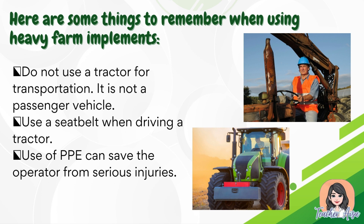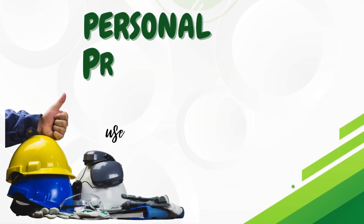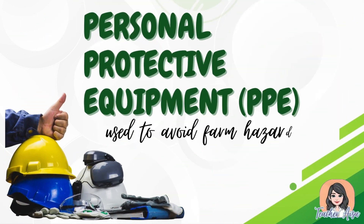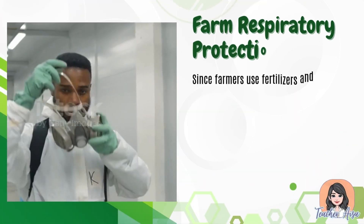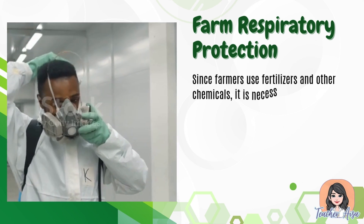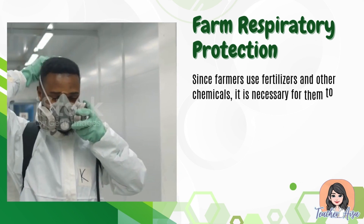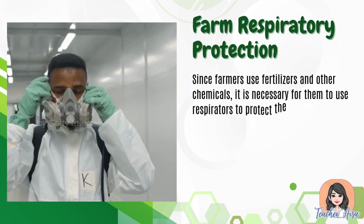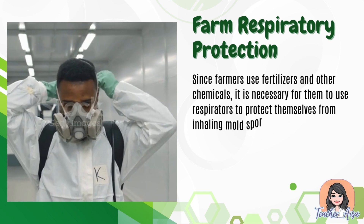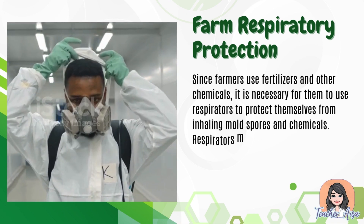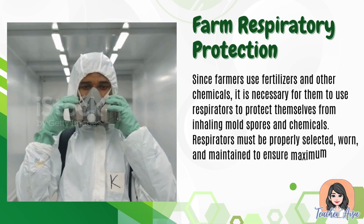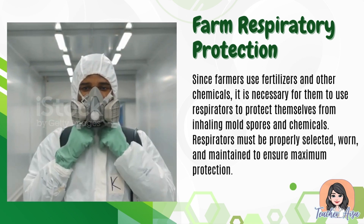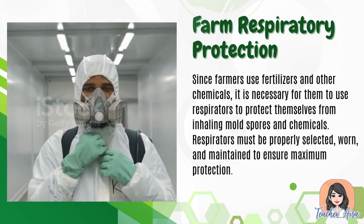Personal protective equipment (PPE) is used to avoid farm hazards. Farm respiratory protection — since farmers use fertilizers and other chemicals, it is necessary for them to use respirators to protect themselves from inhaling mold spores and chemicals. Respirators must be properly selected, worn, and maintained to ensure maximum protection.